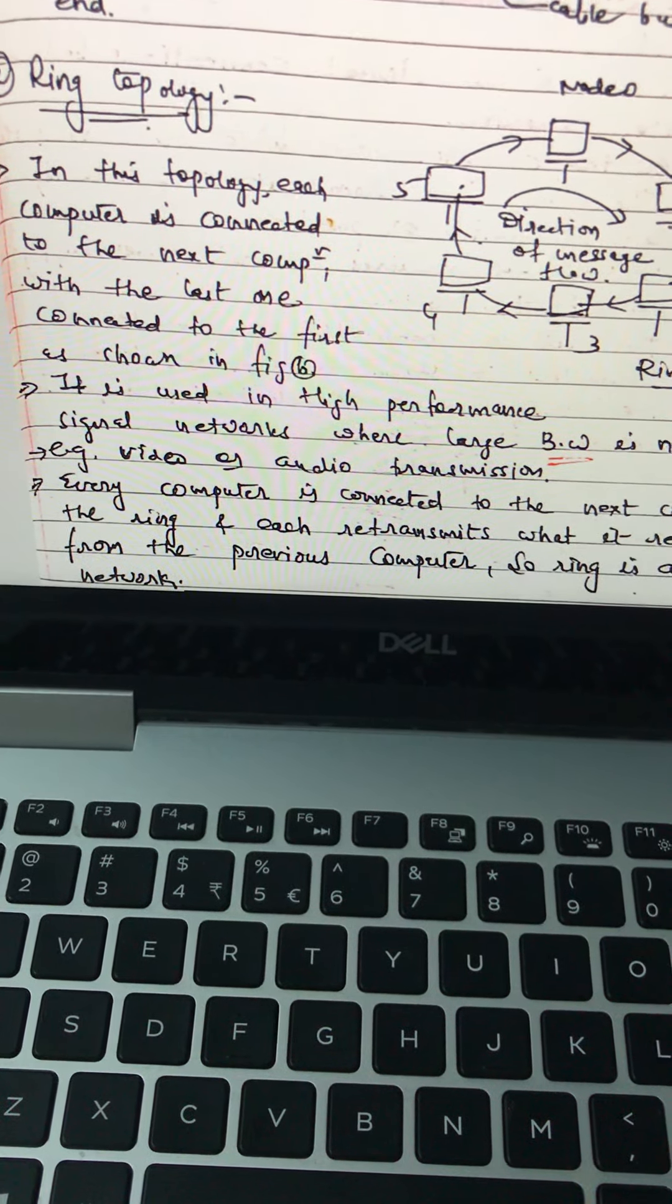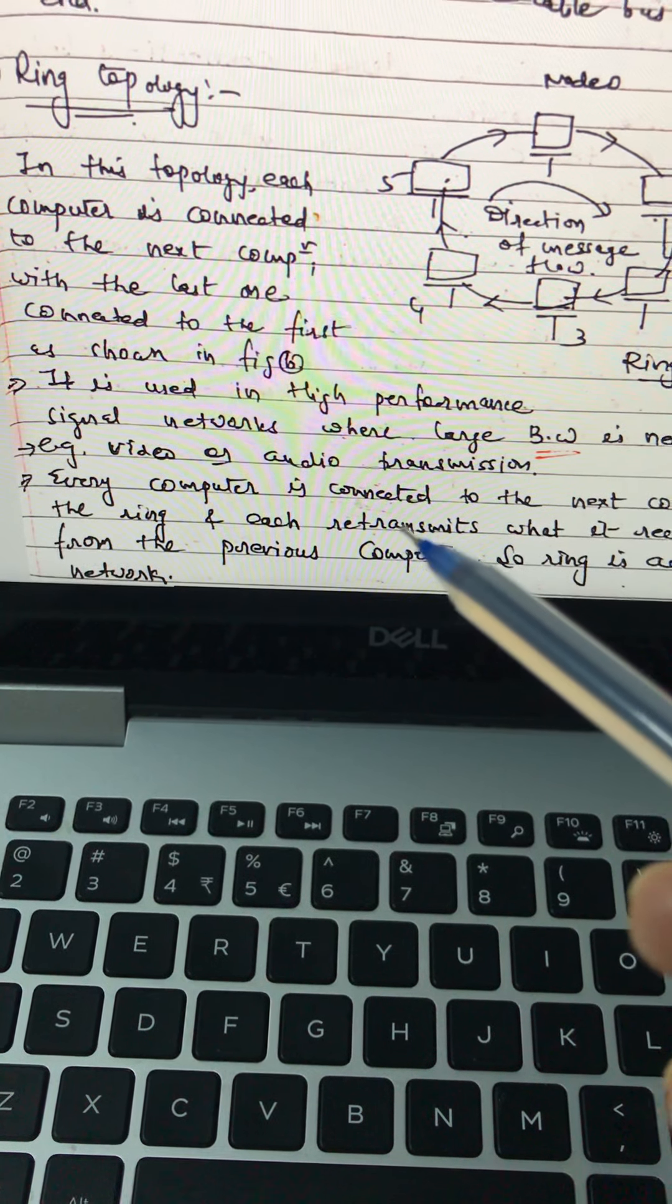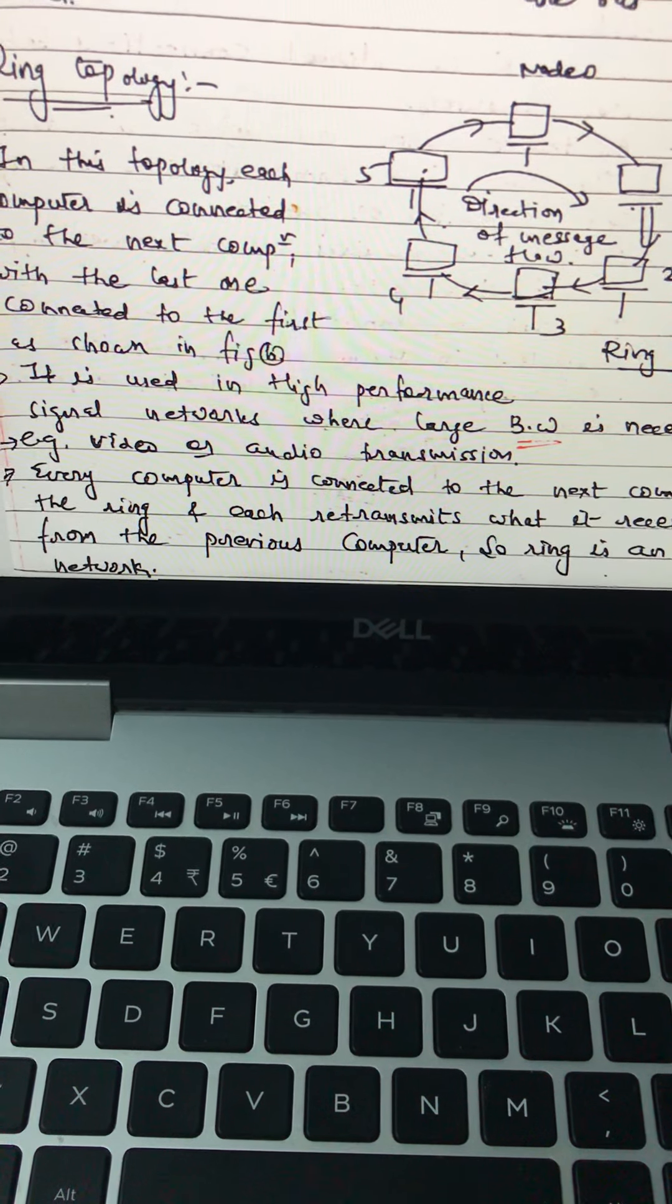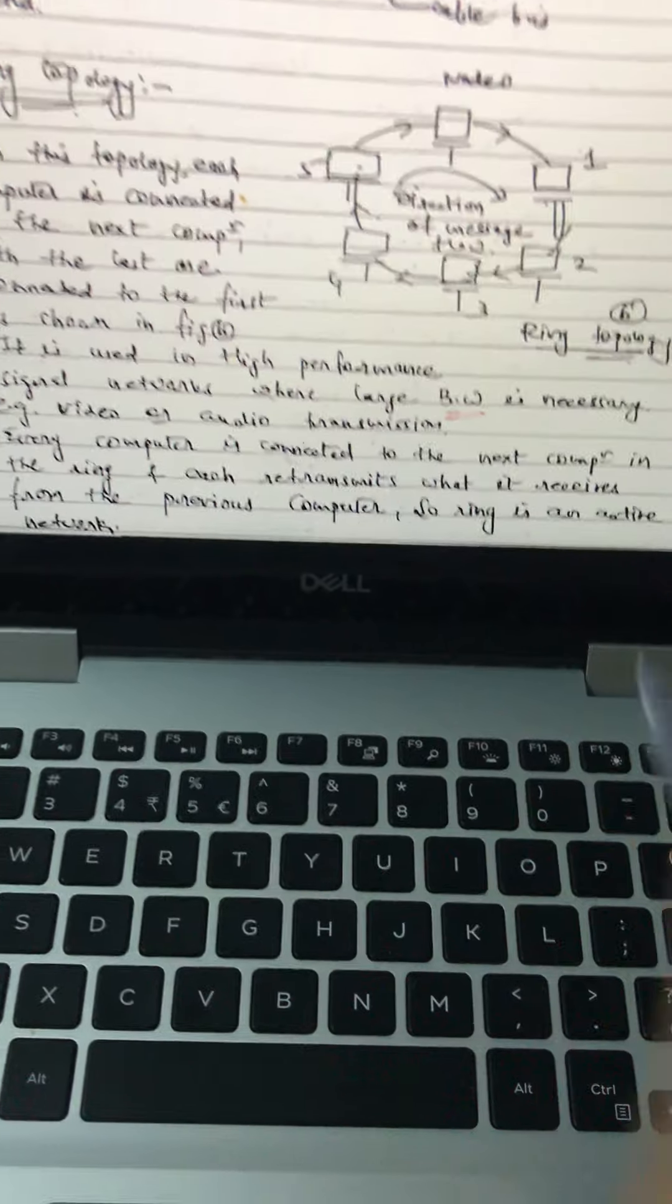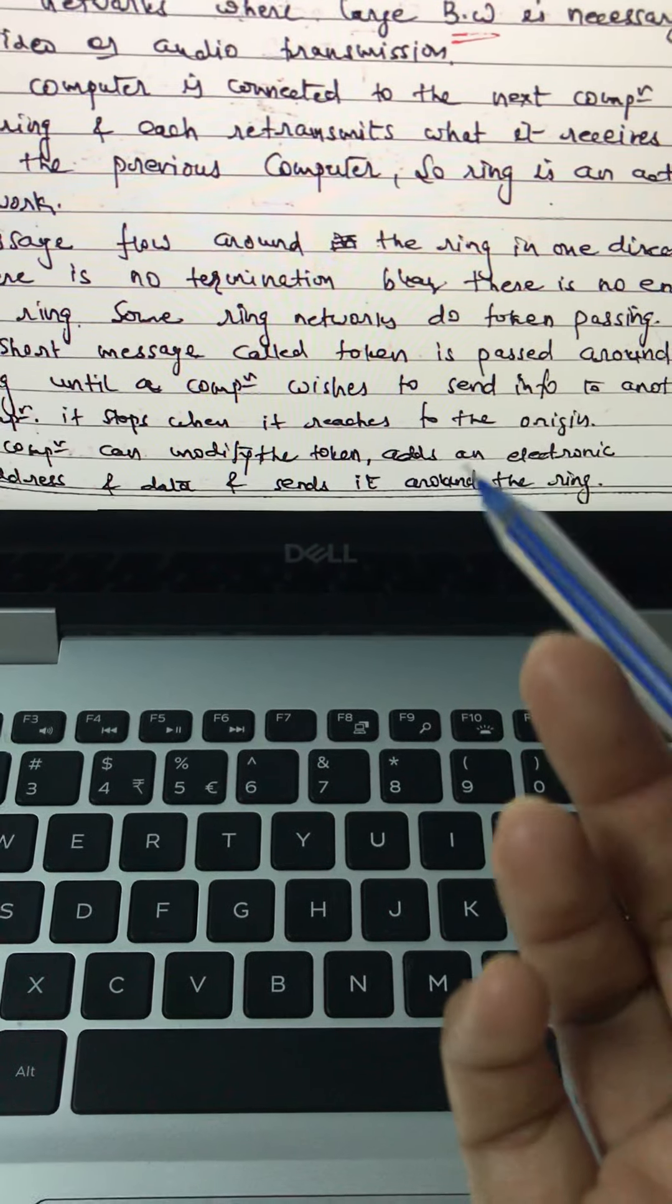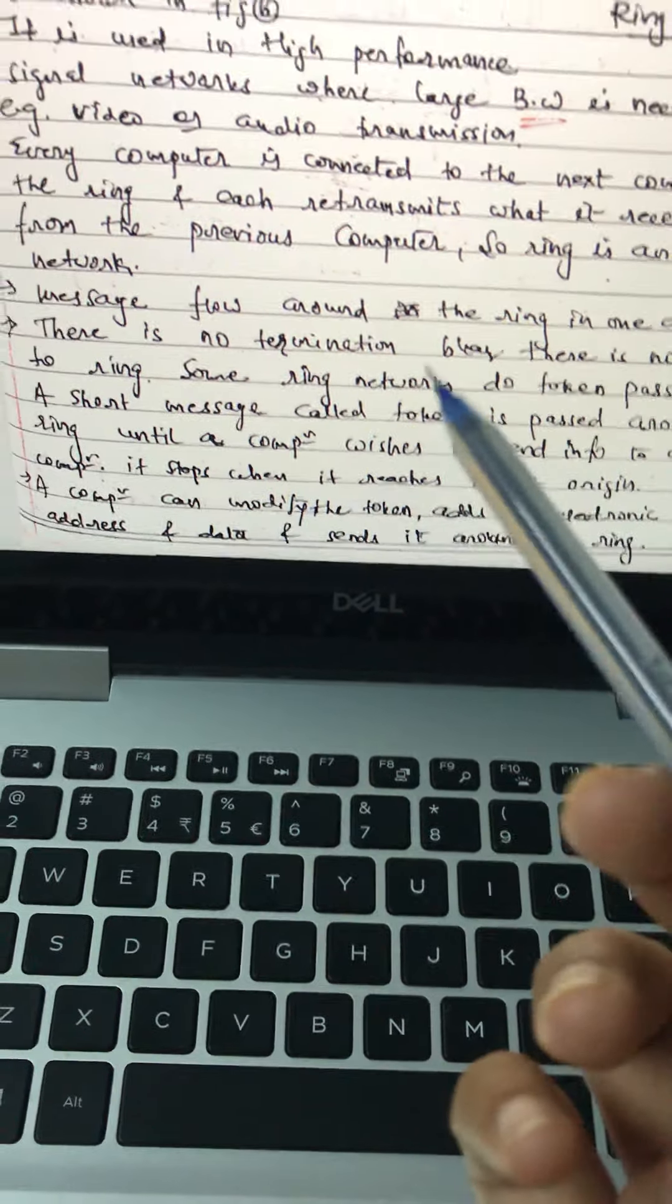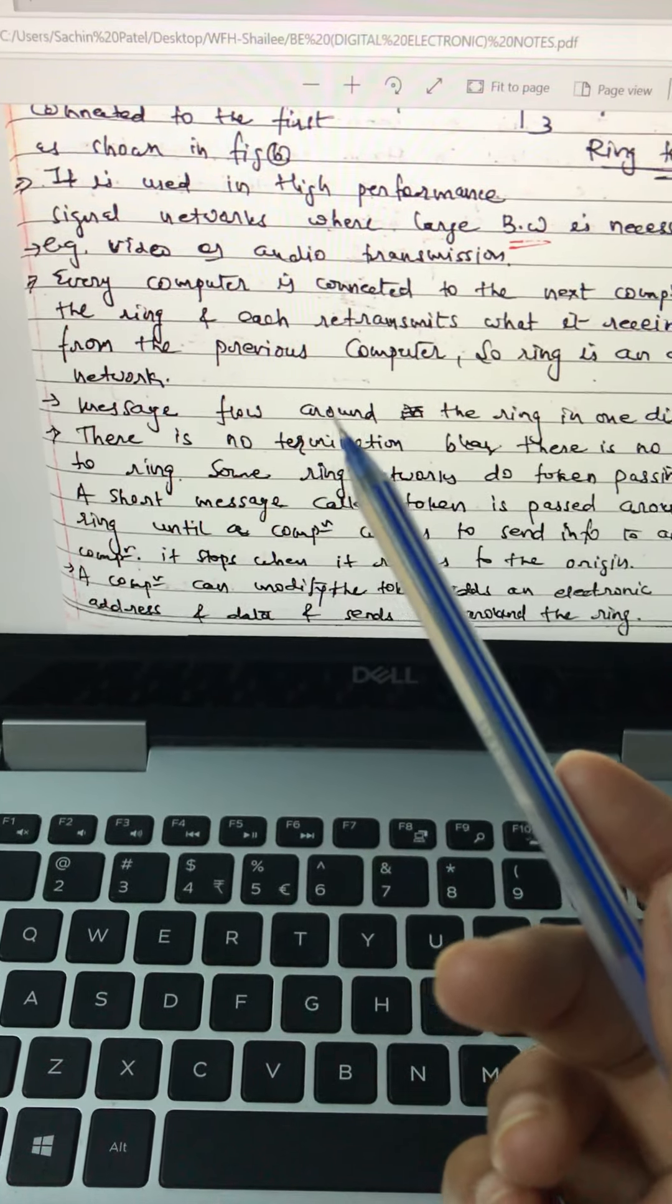It is used in high performance signal networks where large bandwidth is necessary, like video and audio transmission. You can say it's like a WhatsApp group but it's not worthy right now because we are using wireless communication and this is wired type. Every computer is connected to the network computer in the ring.